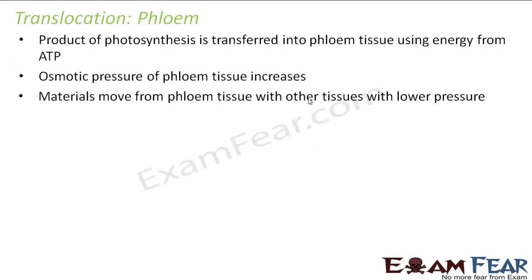And this actually leads to the process of translocation. So translocation is mainly governed by the change in osmotic pressure. Due to the transfer of the product of photosynthesis into the phloem tissue, its osmotic pressure increases. Therefore, materials start moving from the higher osmotic pressure of phloem tissue to the lower osmotic pressure of other tissues.